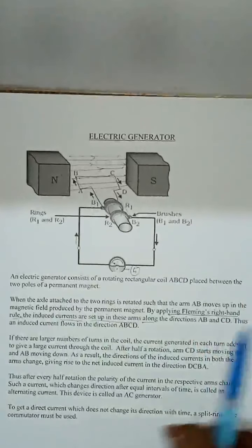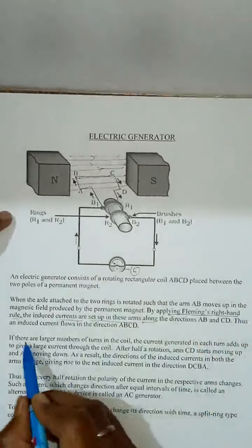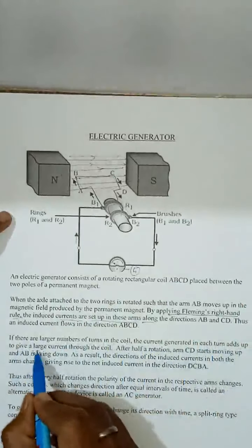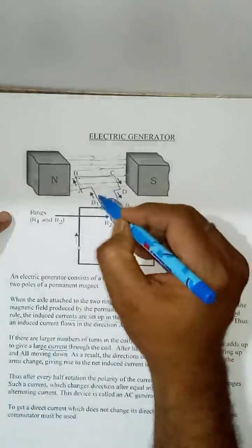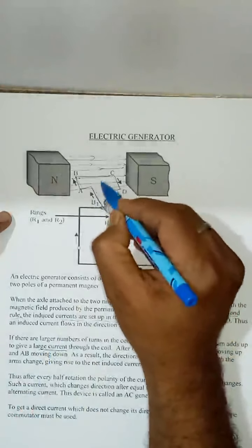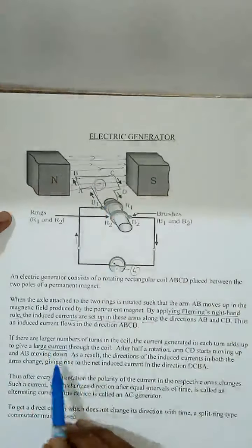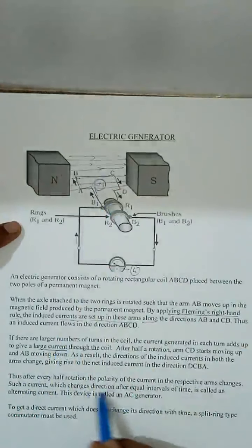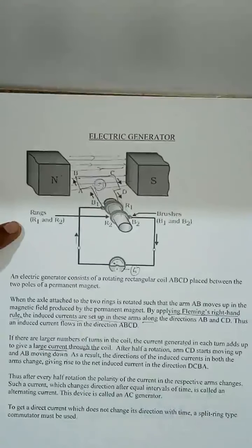Now if there are a large number of turns in the coil, the current generated in each turn adds up to give large current. That means if number of turns here will be more, then large current. To get a direct current which does not change its direction with time, a splitting type commutator is used. This produces direct current.